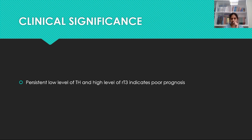What is the clinical significance? Sometimes it helps us to decide upon the prognosis. Persistently high levels of reverse T3 and persistently low levels of T3 and T4 may indicate poor prognosis. Thank you, and I will meet you all soon with further topics on endocrine disorders.